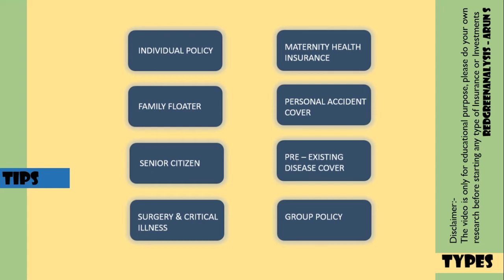If you want the best coverage, make sure all family members are included in the plan. However, if you are getting an insurance policy, please check the premiums. If senior citizens are added to a family floater plan, the premiums can be higher because aged people are considered higher risk. That's why senior citizens may need a separate plan.